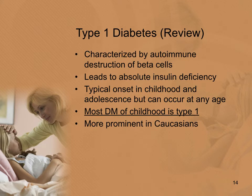Type 1 diabetes is characterized by autoimmune destruction of beta cells, which are responsible for production and release of insulin, ultimately leading to absolute insulin deficiency. Typical onset is in childhood and adolescence, though it can occur at any age. Most diabetes seen in childhood is type 1, and it is more prominent in Caucasians.